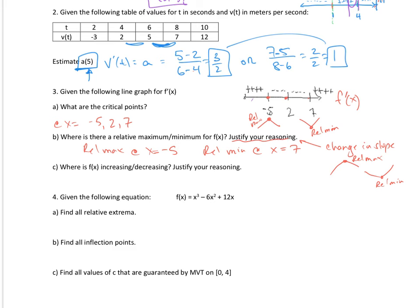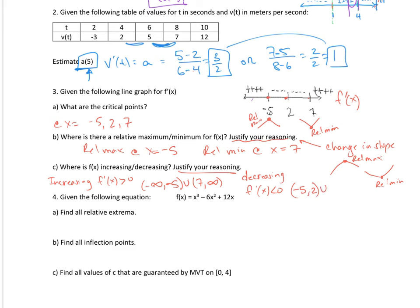Now we need to determine where f of x is increasing and decreasing. It's increasing when f prime of x is greater than 0, and from the line graph this occurs on the interval from negative infinity to negative 5, union with 7 to infinity. It's decreasing when f prime of x is less than 0, and this occurs on the interval from negative 5 to 2, union with 2 to 7. Notice I did not include the point at 2, because that is a critical point where the function is neither increasing nor decreasing.